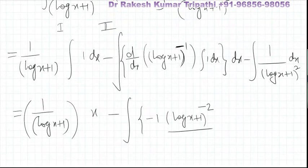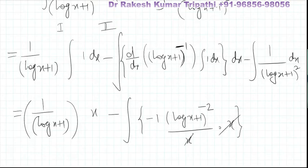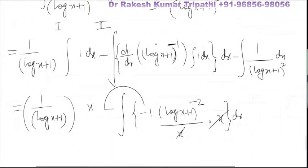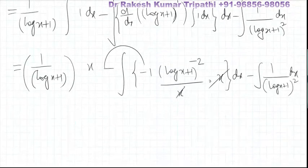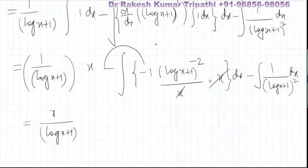The derivative of log(x + 1) is one by x, plus the derivative of one is zero, into integral of one which is x — so x and x cancel. The two signs, minus and minus, cancel to give plus. So we get minus one upon (log(x) + 1) whole squared dx. Writing it out: x upon (log(x) + 1) minus, then plus one upon (log(x) + 1) whole squared dx.